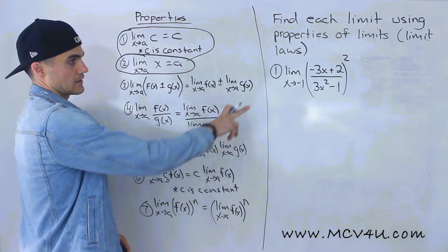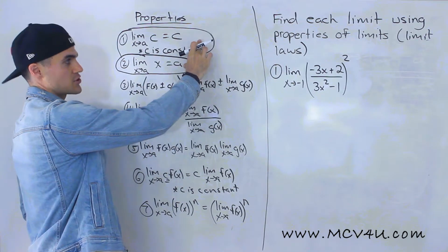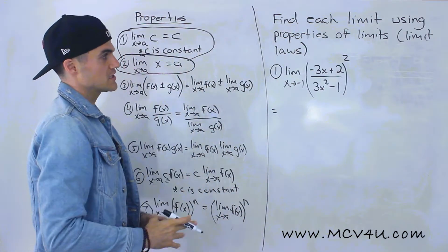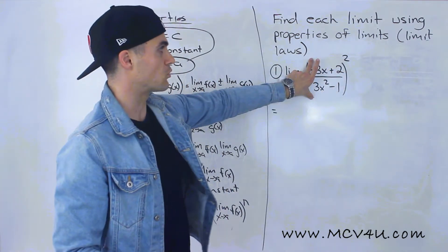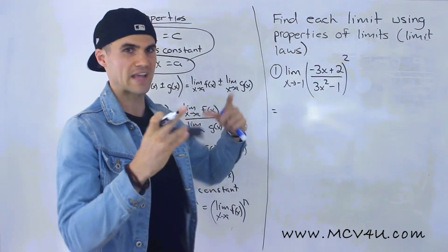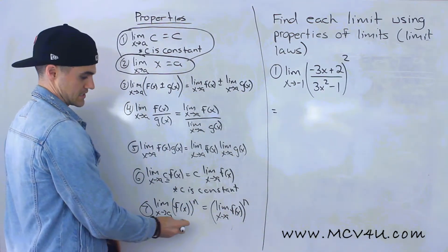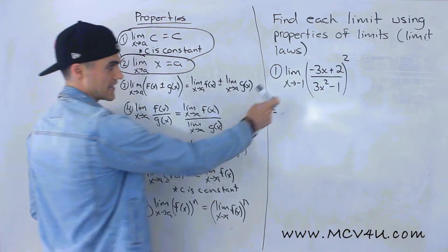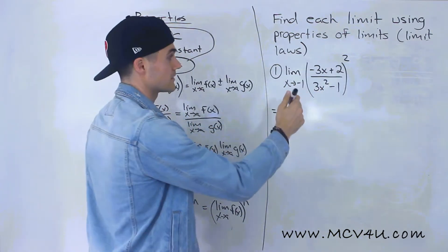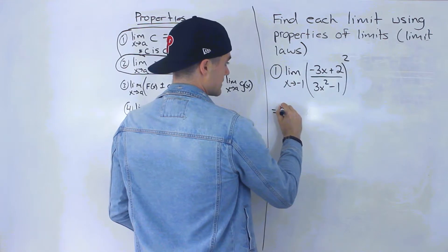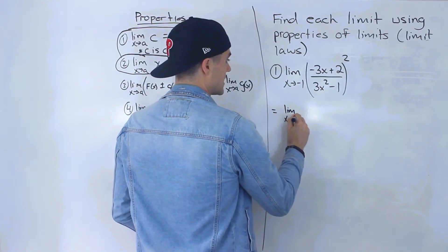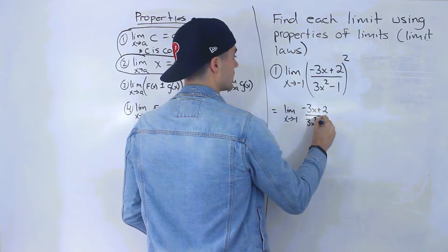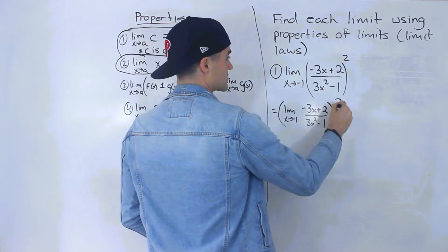We need to get this expression into terms of basic limit expressions. Notice that we have this big function in brackets, and then it's squared — that's the outermost function. So the first law we use is law number seven, where we have a function to the power of n. We rewrite this as the limit as x approaches negative one of negative three x plus two, all over three x squared minus one, in brackets, all squared.